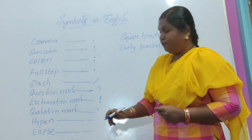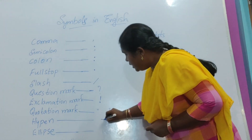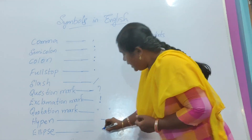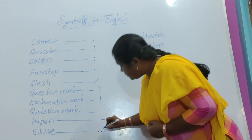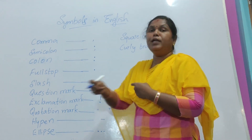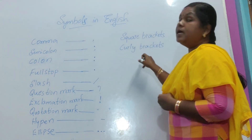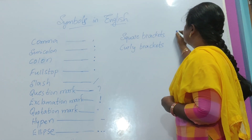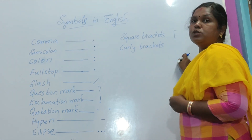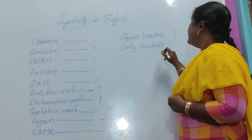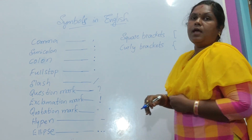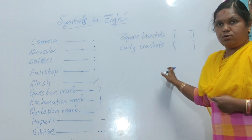Next comes the hyphen. A hyphen is a small dash. Next comes the ellipse. Ellipse continues for three dots — it means continuation. Next come square brackets, and then curly brackets.